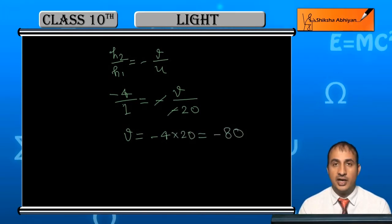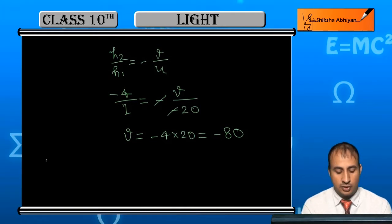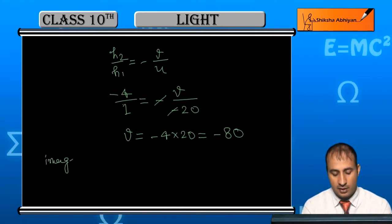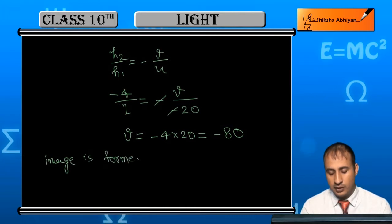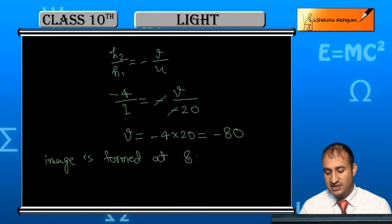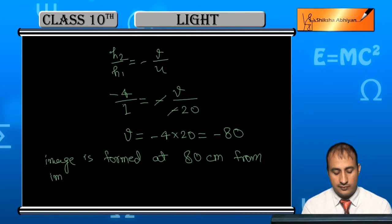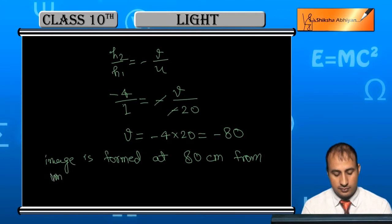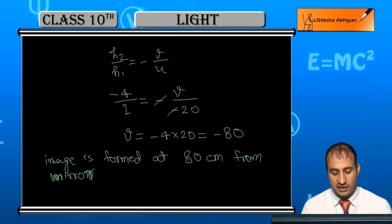So this means the image is formed at 80 cm from the mirror, in front of the mirror.